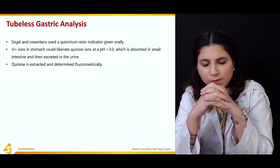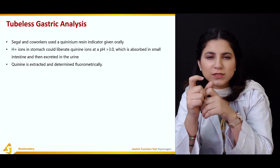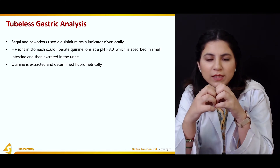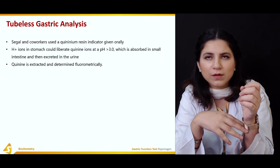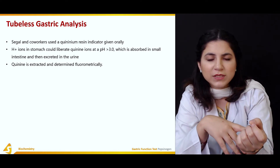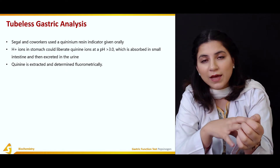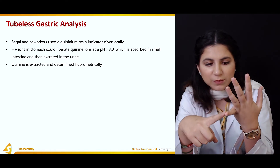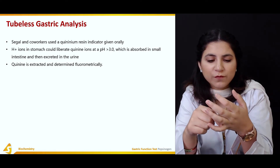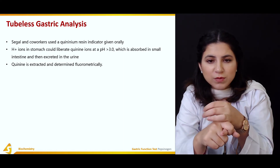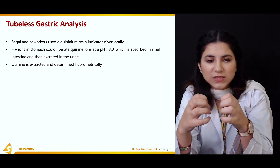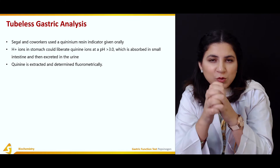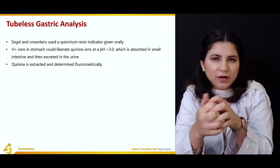To summarize: instead of inserting a tube, you give the patient a resin orally. Since the resin can liberate quinine ions if sufficient hydrogen ions are present in the stomach at a pH of more than three, this determines the stomach's pH. By measuring the absorbed quinine excreted in the urine, we can identify how much hydrogen ion is being released, and this is determined fluorometrically.